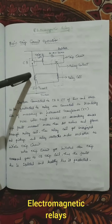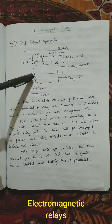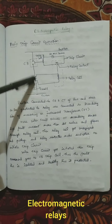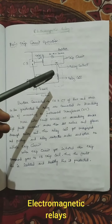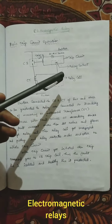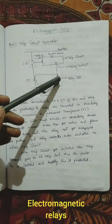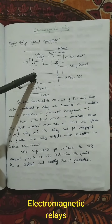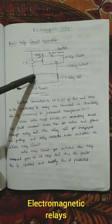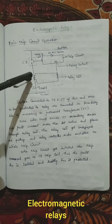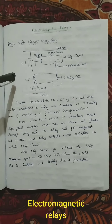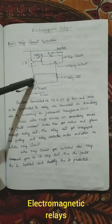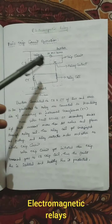The primary CT is connected in series with this line. The secondary of the CT is connected to the relay coil — the primary CT senses the current, and through induction the secondary of the CT feeds the relay coil.